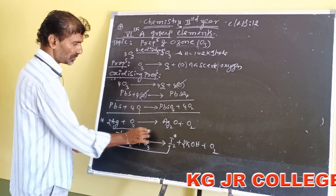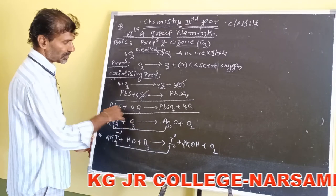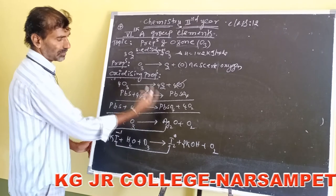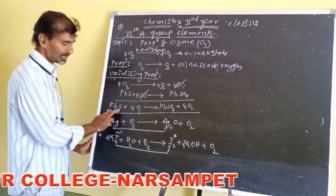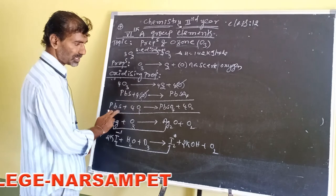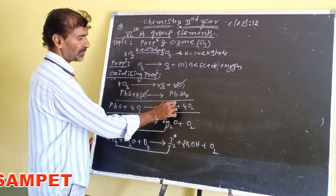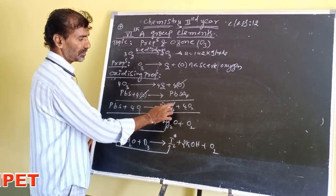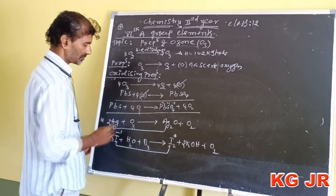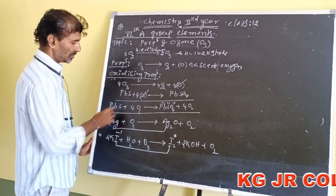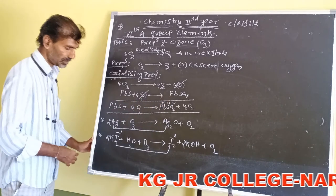In these reactions: iodine goes from -1 to 0 oxidation, silver goes from 0 to +1, and in lead sulfide (PbS), sulfur is at -2 and lead is at +2, giving an overall oxidation state change in forming lead sulfate (PbSO₄).